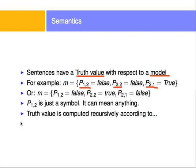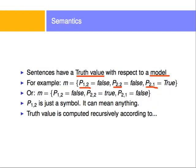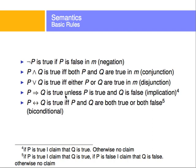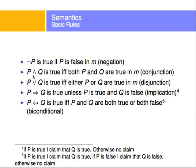Truth values are computed via rules laid out here. Negation: the negation of a variable is true only if the variable is false. So in our example, not P12 would be true when P12 is false.